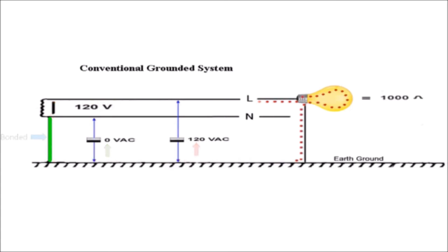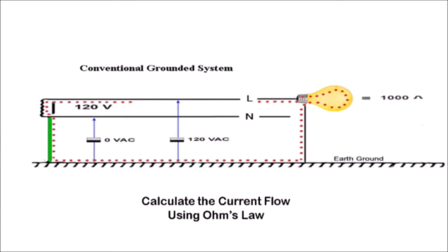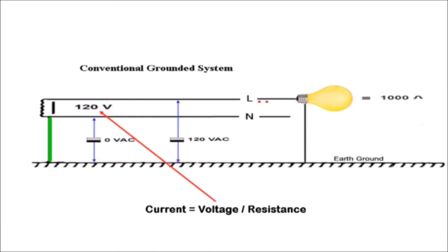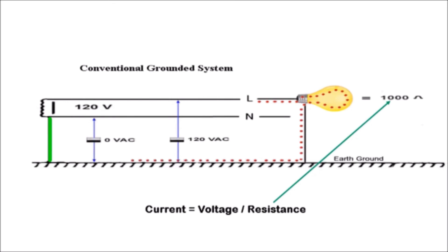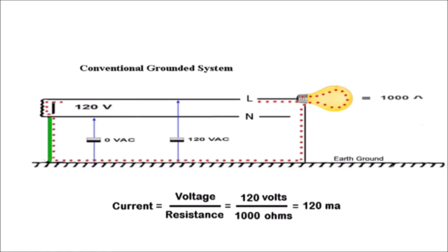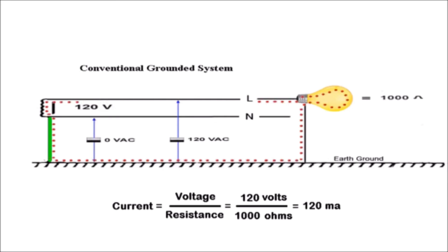Now we want to calculate the amount of current going through the light bulb. To do this, we use Ohm's law. Ohm's law states that current is equal to the voltage divided by the resistance. The voltage is shown here as 120 volts, and the resistance is equal to 1000 ohms. Plugging those values into our equation, current equals voltage divided by resistance, or 120 volts divided by 1000 ohms would equal 120 milliamps.